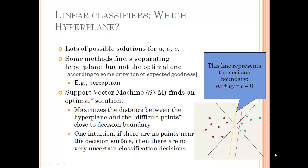This slide shows the decision boundary line of ax plus by minus c. Some methods find a separating hyperplane but not the optimal one. Support vector machine finds the optimal solution that maximizes the distance between the hyperplane and the difficult points close to the decision boundary.